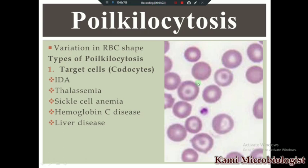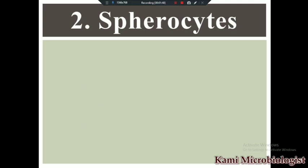When you see the blood smear under the microscope, target cells will look like RBCs that have a red point in the middle portion — almost as if they have a nucleus, although RBCs do not have a nucleus. When you see RBCs in this form, we call them target cells or codocytes.